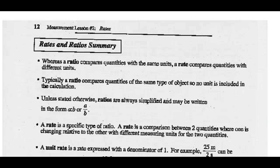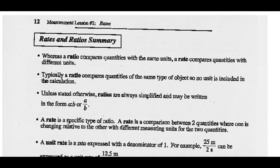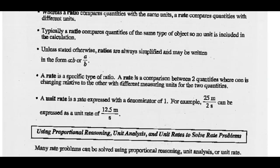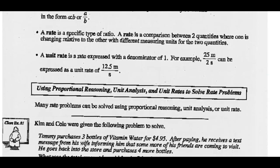Rates and ratio summary then. Whereas a ratio compares quantities with the same rates, a rate compares quantities with different rates. Typically, a ratio compares quantities of the same type of object, so no units included. Unless stated otherwise, ratios are always simplified and can be written in either form A to B or the form A over B. A rate is a specific type of ratio. A rate is a comparison between two quantities where one is changing relative to the other with different measuring units for the two quantities. And a unit rate is a rate expressed with a denominator of one. For example, 25 meters in two seconds would be a unit rate of 12.5 meters per second.